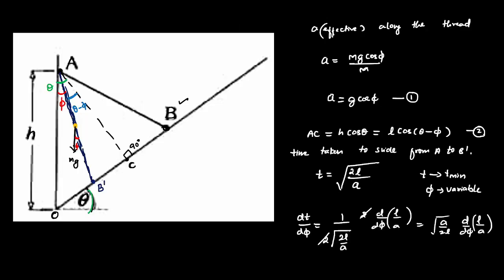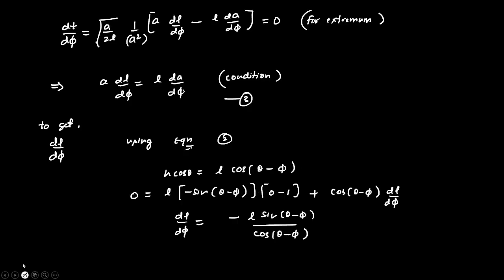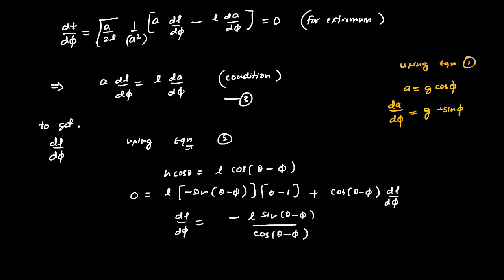Using equation 1 to find da/dφ: since a = g·cos(φ), differentiating gives da/dφ = -g·sin(φ). Call this equation 5.